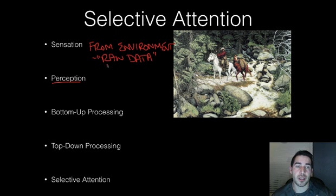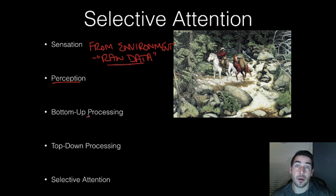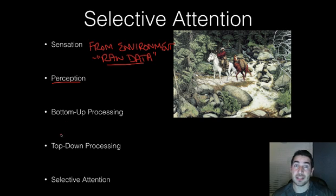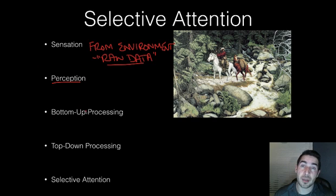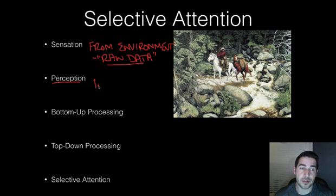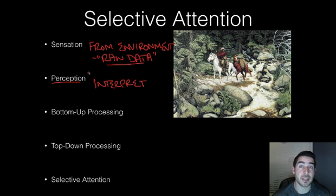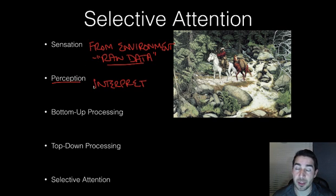Perception is how we interpret that data, how we make sense of it. So perception is: what is that light hitting my eyeball right now? How am I interpreting that? Am I perceiving enough of a signal from that light to pay attention to it? Is that voice I'm hearing enough for me to pay attention to it? Perception directs our attention — it's how we interpret those signals we're receiving. Sensation is what you're getting; perception is how you interpret it and make sense of it.